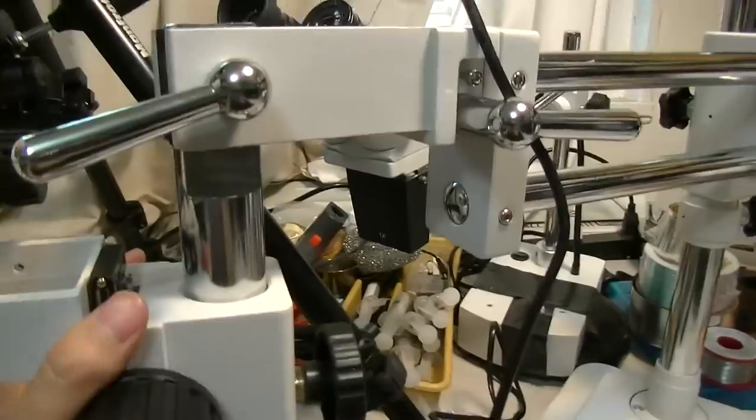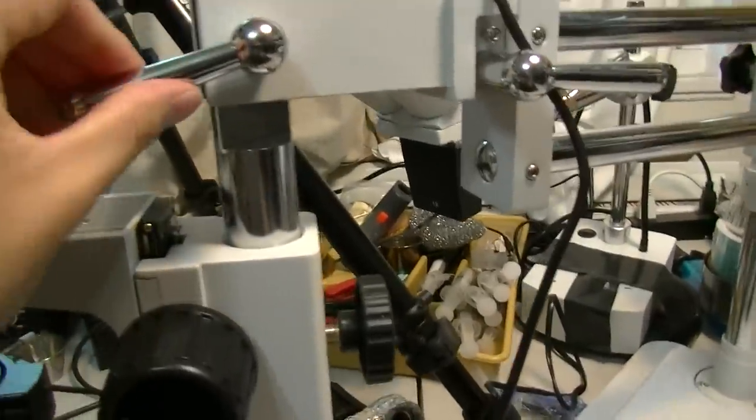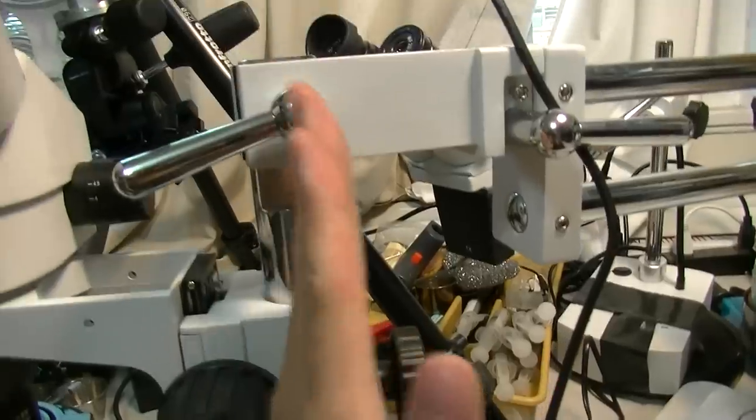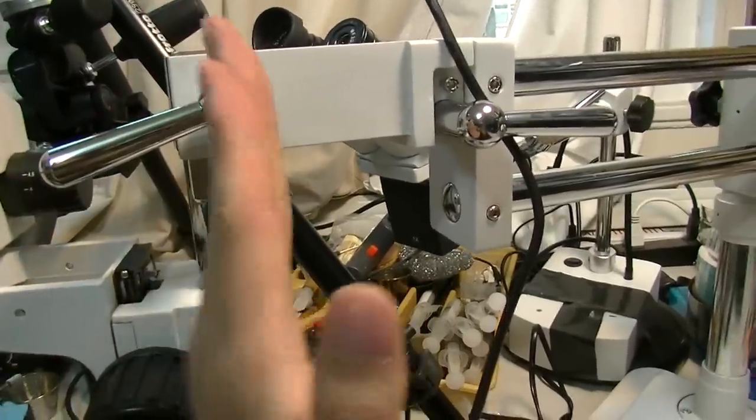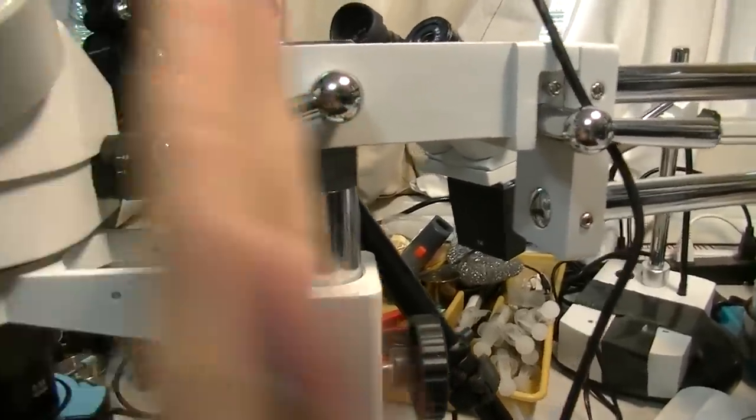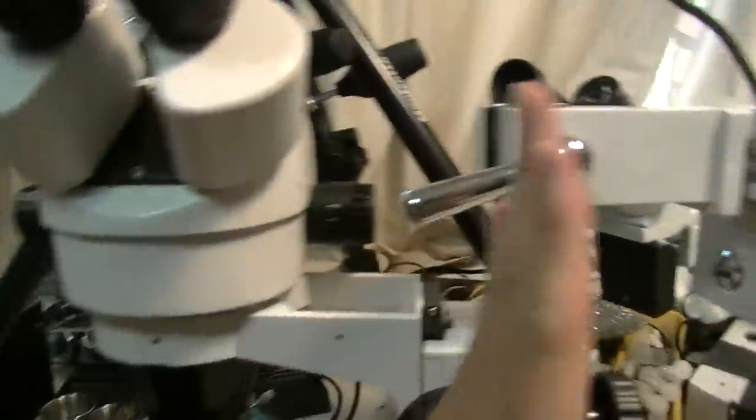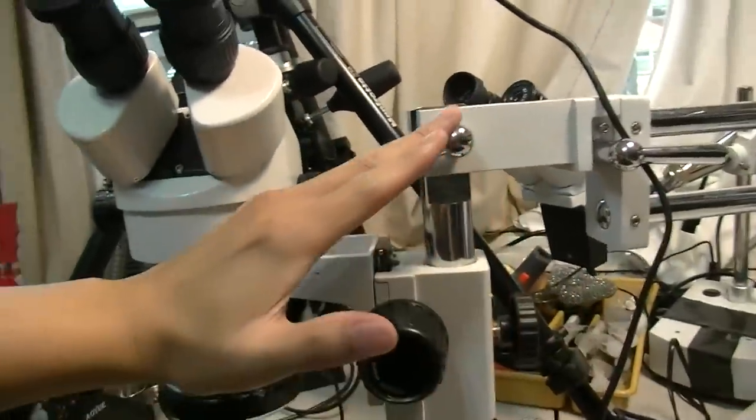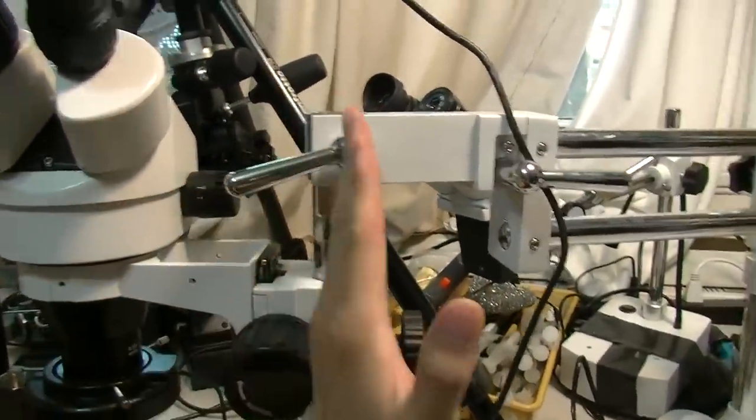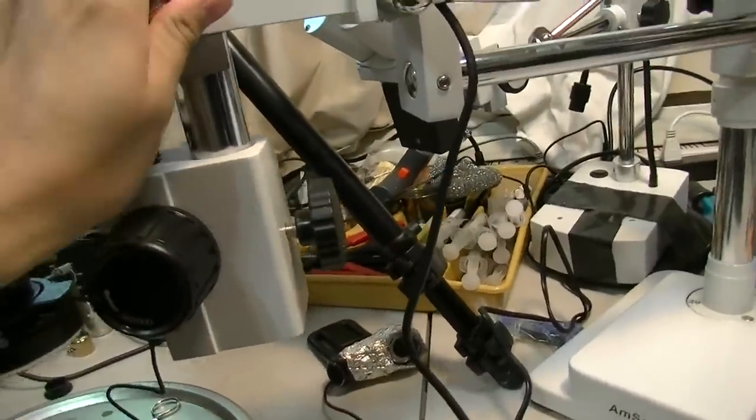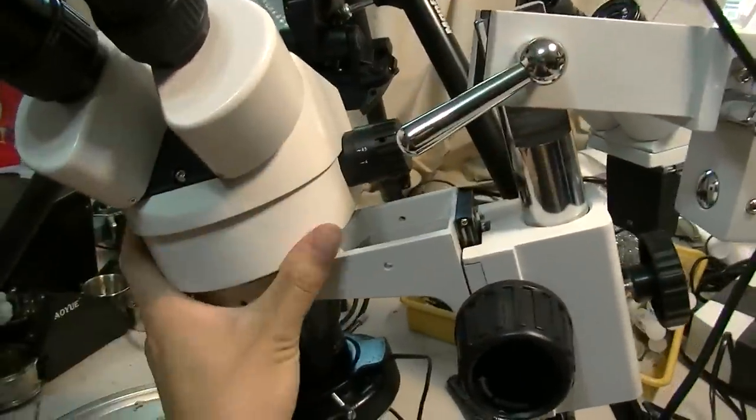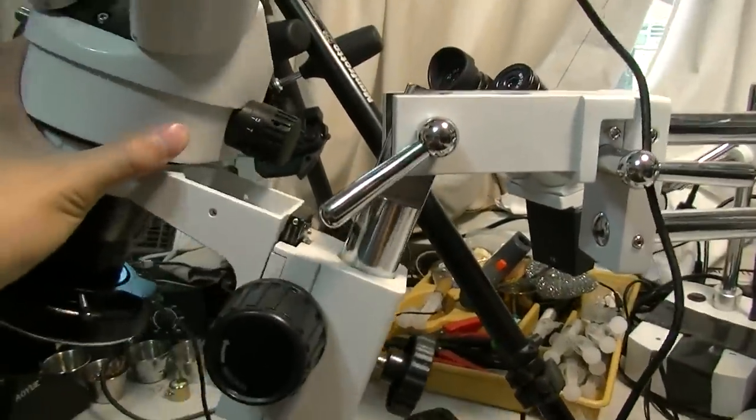And they articulate. If you release this valve, it articulates this way. And once you lock it in, it stays locked in one place, but the microscope itself can move this way. See, the microscope can be, once you loosen it, you can adjust it.